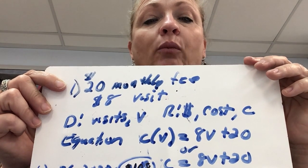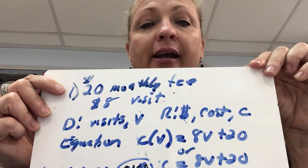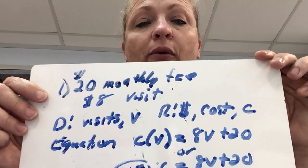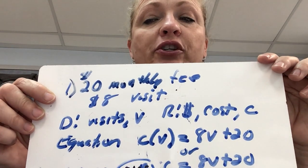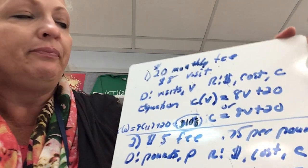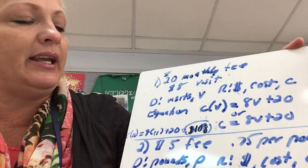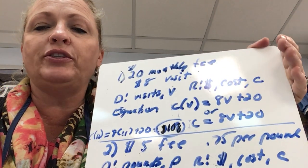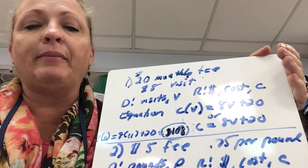Secondly, you don't need to try to write the equation right away. Decide what your domain stands for, decide what your range stands for. What I underlined is that in number one there's a $20 monthly fee and it's $8 a visit.